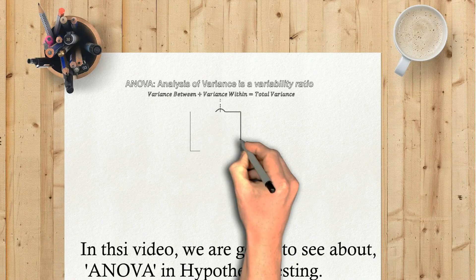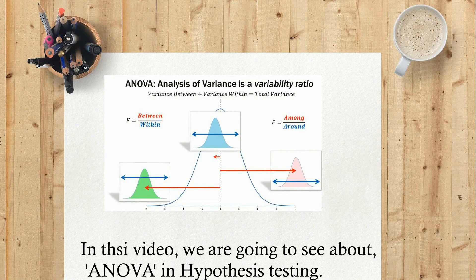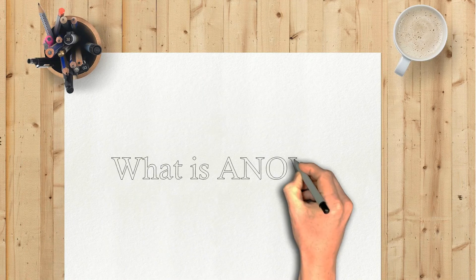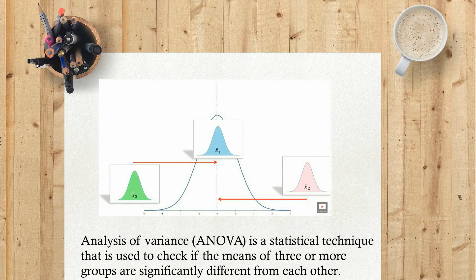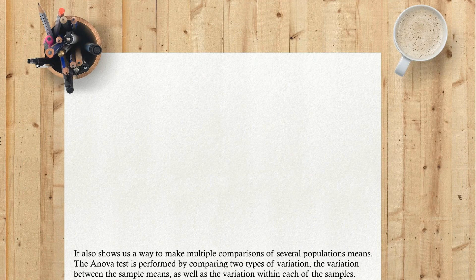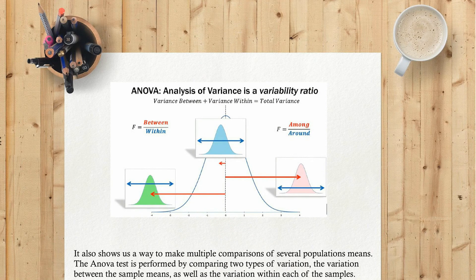In this video, we are going to see about ANOVA in hypothesis testing. What is ANOVA? Analysis of Variance is a statistical technique that is used to check if the means of three or more groups are significantly different from each other. It also shows us a way to make multiple comparisons of several population means. The ANOVA test is performed by comparing two types of variation: the variation between the sample means, as well as the variation within each of the samples.